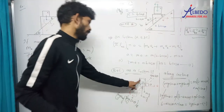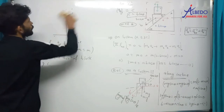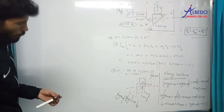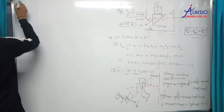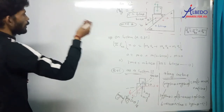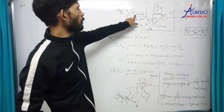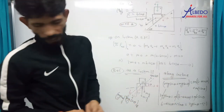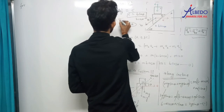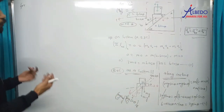Third equation: केवल C को vertically downward लिखते हैं. तो आपके पास तीन equations हैं: B और C में relation (eq.1), along incline equation (eq.2), C vertically (eq.3) — तीन variables और तीन equations, solve हो जाएगा.